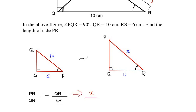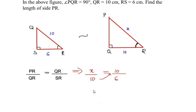So x over 10 is equal to QR, which is again 10, divided by SR, which is 6. So now cross multiplying and taking the 10 on the other side of the equal to sign, we get x is equal to 10 times 10 over 6.